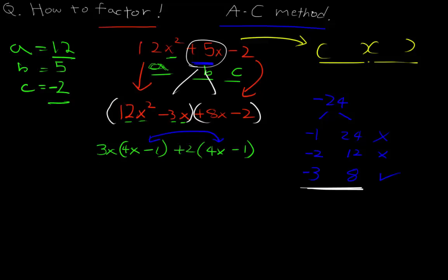Now the last step is we have to combine these two into one and combine these two into one. So 3x + 2 becomes our one term, and 4x - 1 becomes our second term.